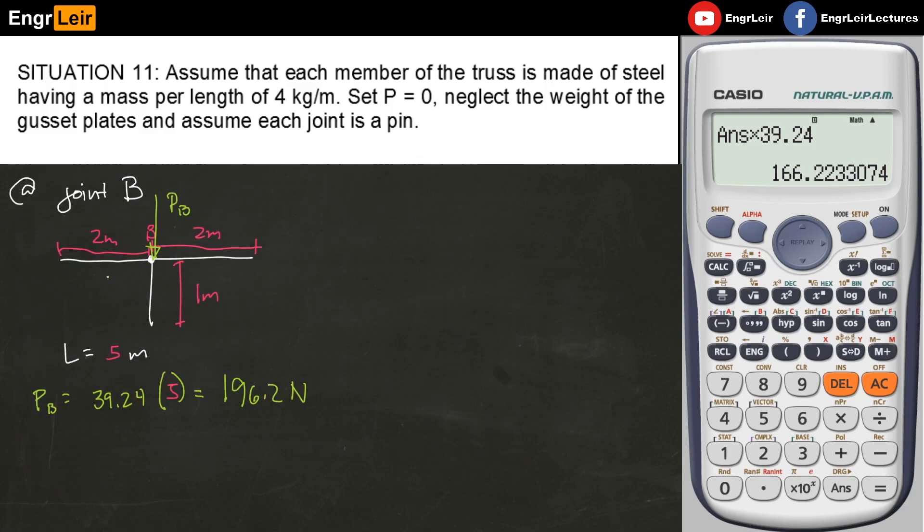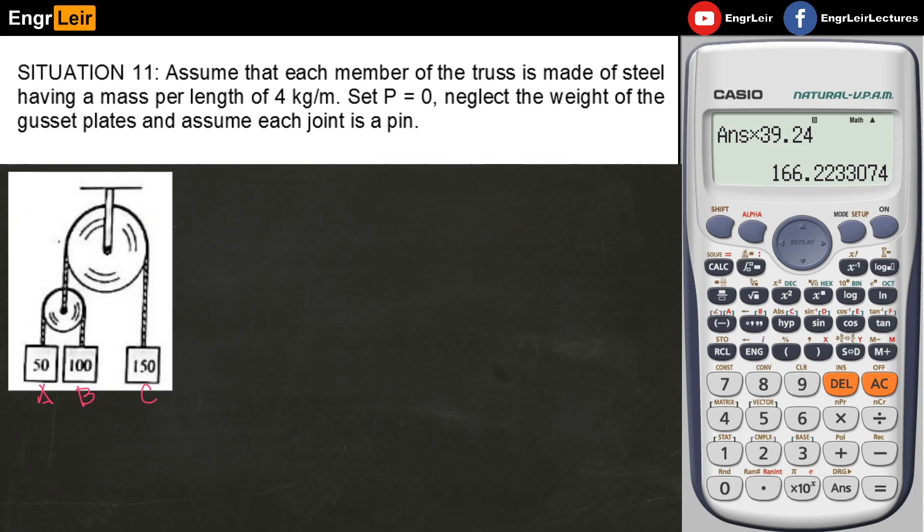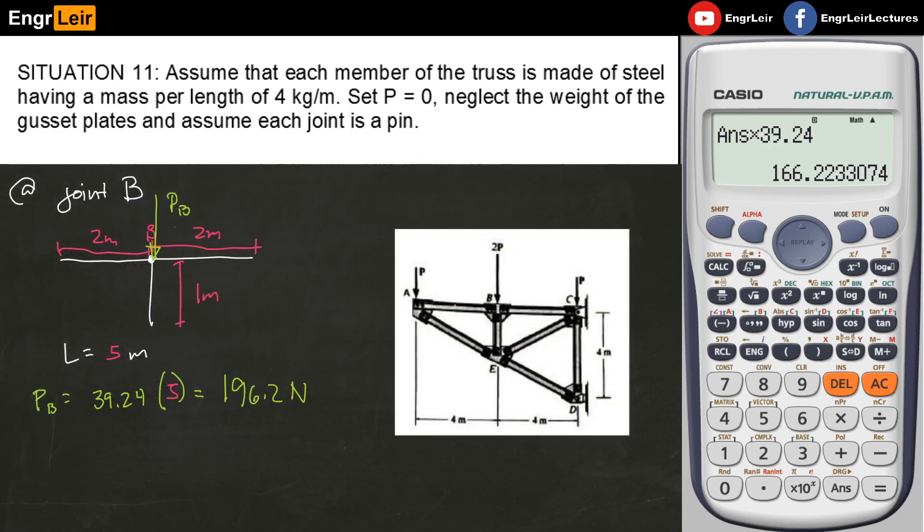For joint B, take half of each member connected to it. This is 2 meters, half of this member is 2 meters, and half of this one is 1 meter. The total length affecting joint B is 5 meters. The total weight at joint B is 196.2 newtons. Now we know how to distribute the weight to the joints, and we'll do the same for other joints.